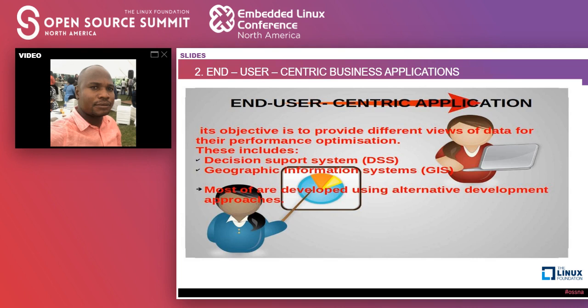Then we move on to the second one, which is user-centric business applications. The organization mainly provides a different view of data. We have our application but we need that data to be presented in a presentable way — for example, decision support systems or geographic information systems. These use user-centric approaches to provide a different view of data for performance optimization, using alternative development approaches rather than traditional methodologies.